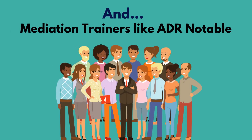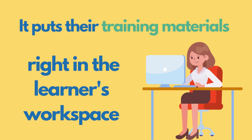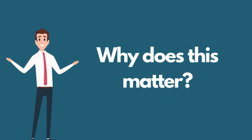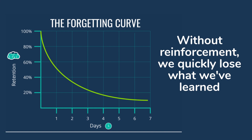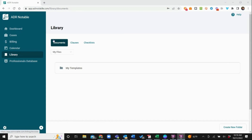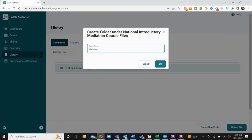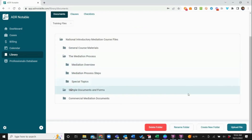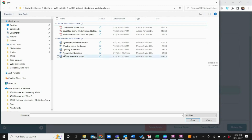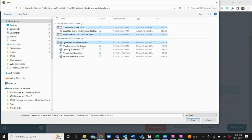Another group that benefits from ADR Notable are mediation trainers. Dispute resolution trainers can put their learning materials into a proprietary section of the ADR Notable library. Trainers are very concerned with how to make their training stickier, because as the well-known Ebbinghaus Forgetting Curve shows, it doesn't take long to lose what we learn when there's no reinforcement. An ADR Notable training partner would create a course, build out folders and subfolders, upload course materials, and then do the same with clauses and checklists.